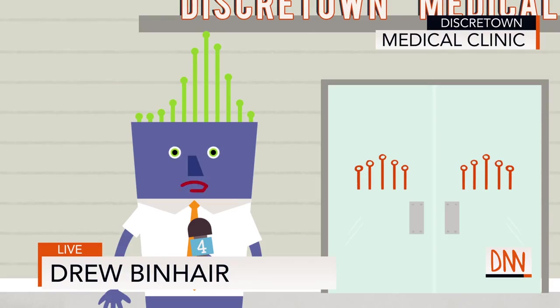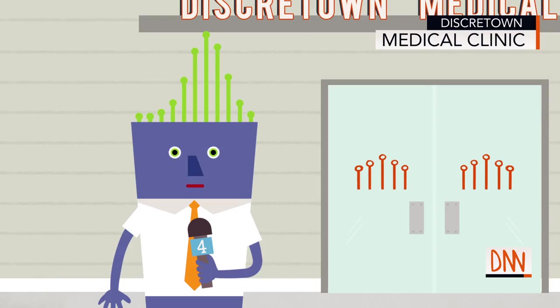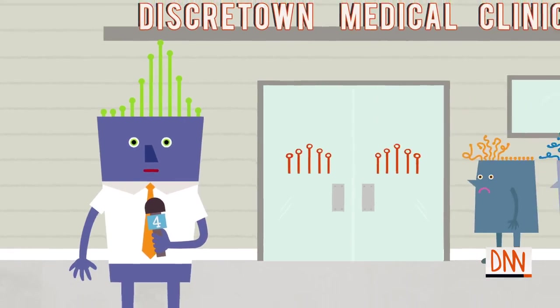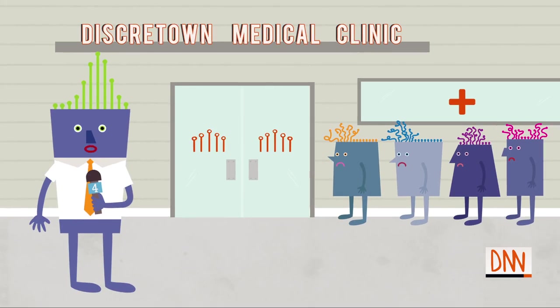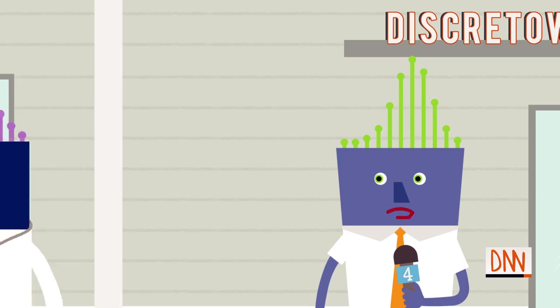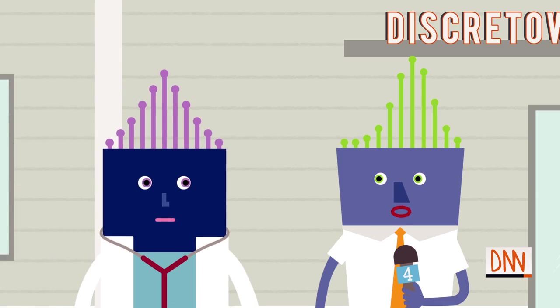This is Drew Benhair reporting live from the Discreet Town Medical Clinic. The town is grappling with an outbreak of hypertangulosis, a condition which makes hair tangled and gnarled. As you can see, the line is out the door. Let's go to Dr. Sarah Straighthair for the latest. Doctor, how is your clinic coping with this horrifying outbreak?